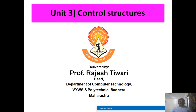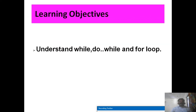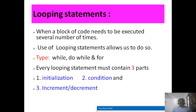Welcome students. Today we see control structures — the third unit of programming in C. Our learning objective is looping statements. In this video lecture we learn how to use while, do-while, and for looping statements in C programs. First, let's understand what a looping statement means. When a block of code needs to execute several times, we use a looping statement. There are three major types: while, do-while, and for.